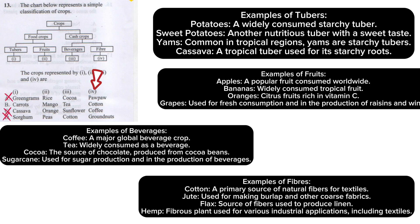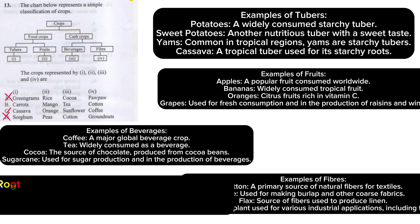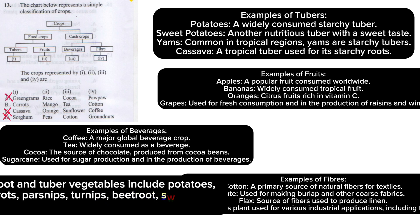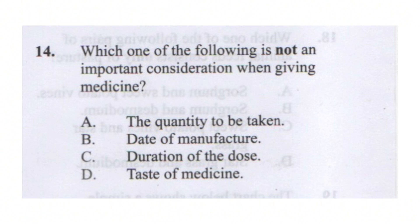We are remaining with choice B. Regarding carrots — there are root and tuber vegetables, which include potatoes, carrots, parsnips, turnips, beetroot, sweet potato, and taro. So carrots fall under tubers. Mango is a fruit. Tea is a beverage under cash crops. Cotton is a fiber. Therefore our answer is choice B.